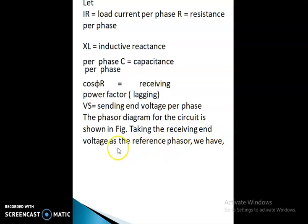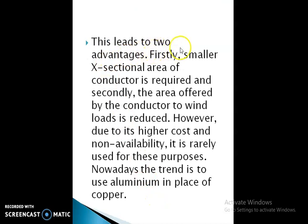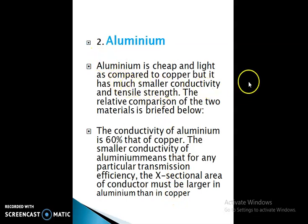The types of conductors: First is copper. Copper is an ideal material for overhead lines owing to its high electrical conductivity and greater tensile strength. Copper has a high current density, meaning the current-carrying capacity per unit cross-sectional area is quite large. This leads to two advantages: firstly, a smaller cross-sectional area of conductor is required, and secondly, the area offered by the conductor to wind loads is reduced. However, due to its higher cost and non-availability, it is rarely used nowadays.